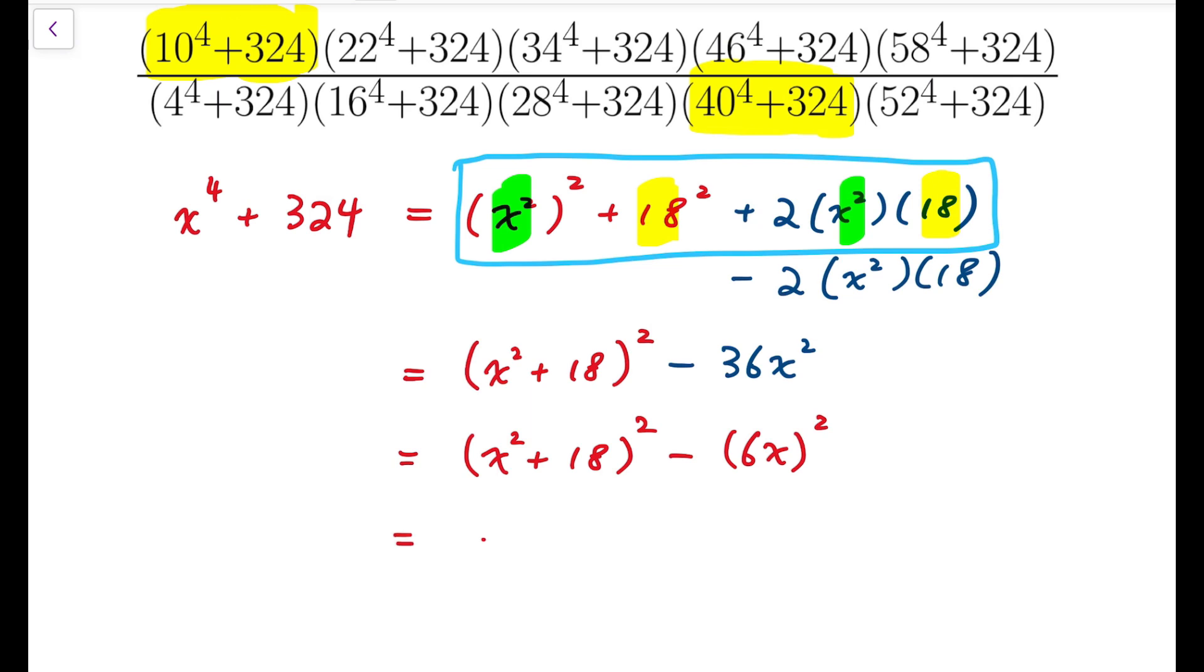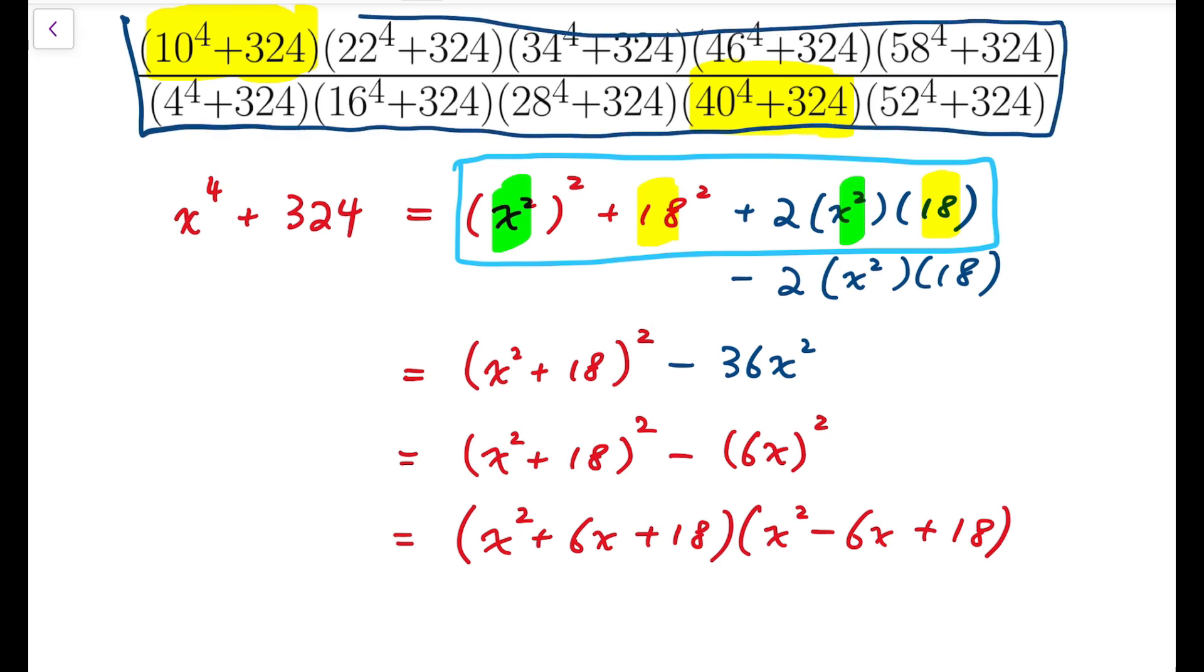So now, that means it's factorizable. And in fact, for us to simplify the fraction in the main problem, we ought to rewrite the expressions in the form x to the 4 plus 324 into products of some numbers, so that we can have some factors at both the numerator and denominator that can be cancelled out.